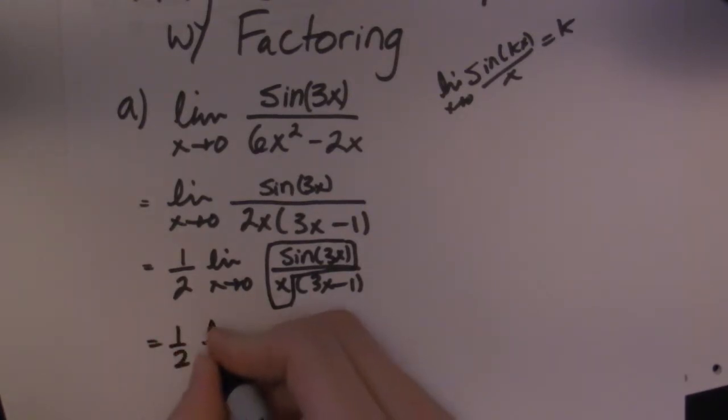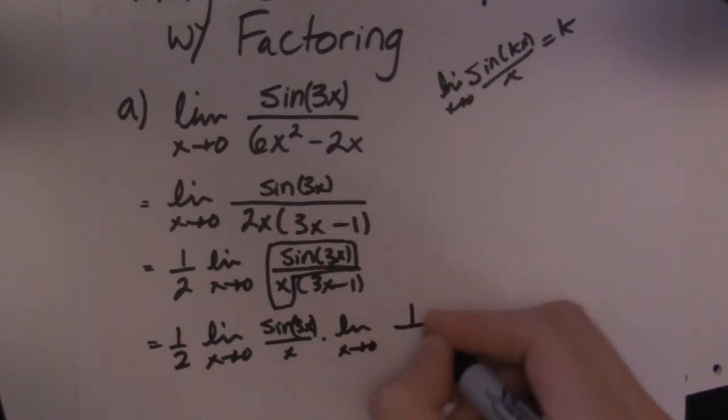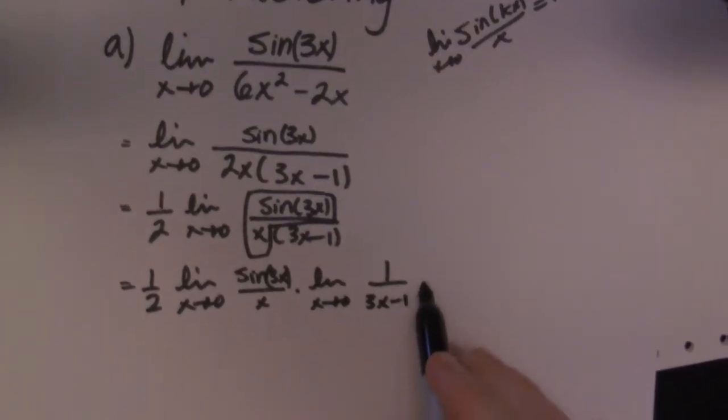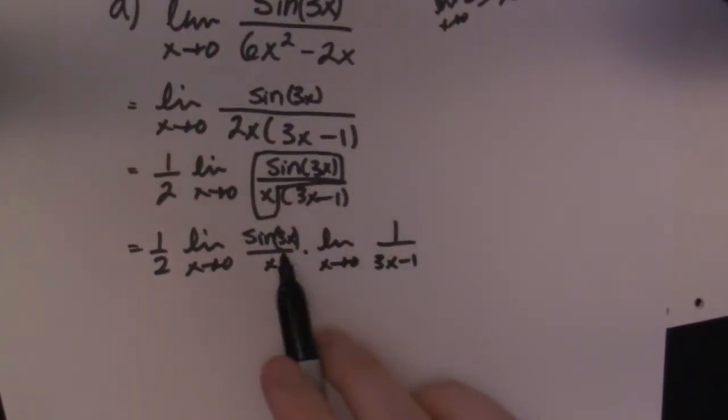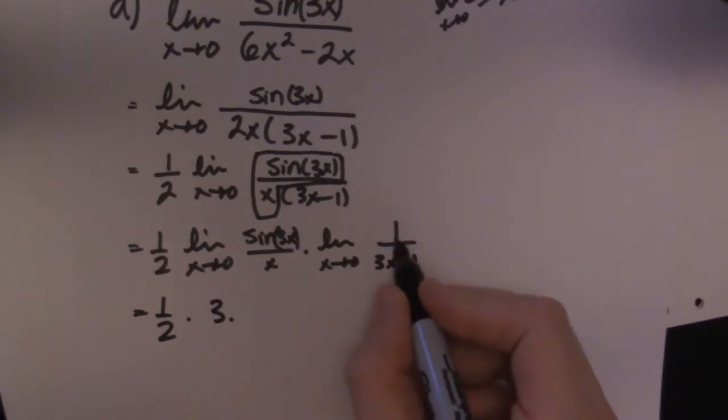So before I just put that 3 in there though, I'm going to rewrite this guy to be sin(3x) over x times the limit as x equals 0 of 1 over 3x minus 1. So I just broke this up into the sin(3x) over x and the 1 over, so the 1 that will be on top here over the 3x minus 1. Just to show my calculus teacher that I kind of know what I'm doing. I'm breaking this up into a known limit and this guy's 3 and this guy just had to sub in the number, so it would be 3 times 0 which is 0 minus 1,